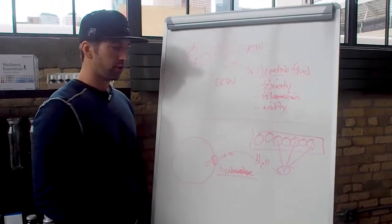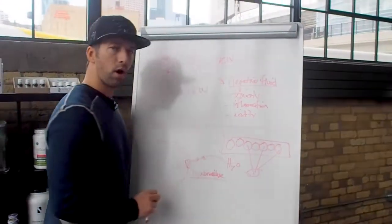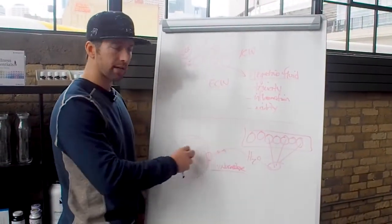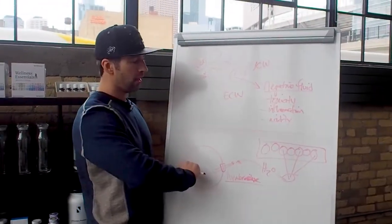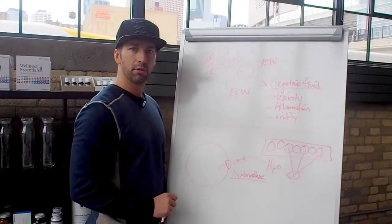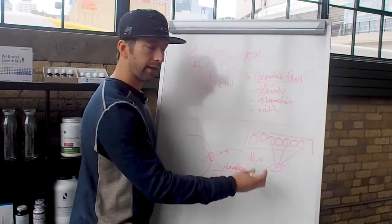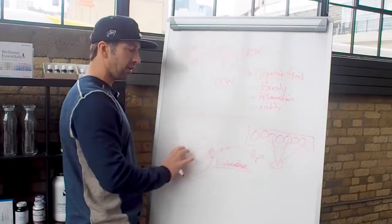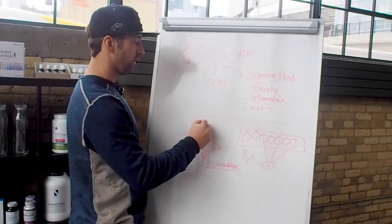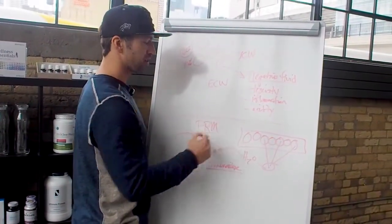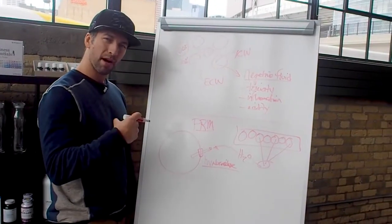As soon as those nutrients are depleted, it pulls the water back out along with the toxins and the inflammation and the general debris of metabolism. And so you have this really nice cycle: feeding, get rid of the waste, feed, get rid of the waste. This by the way is called your primary respiratory mechanism. It's how our body breathes without our lungs and our sinuses and so on.